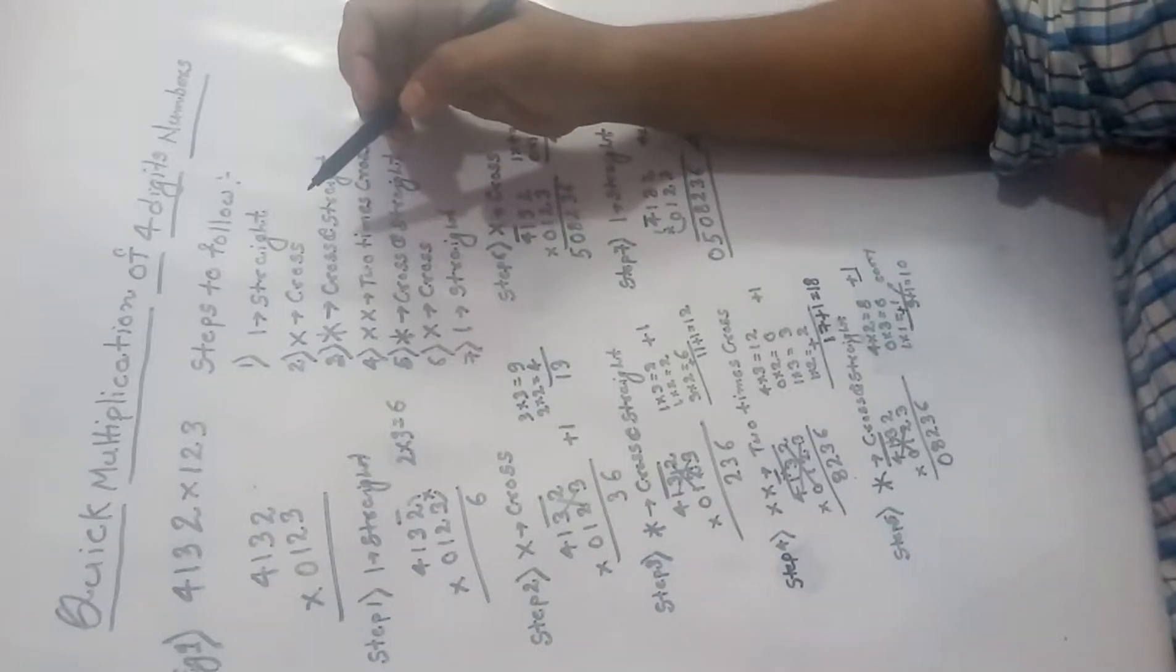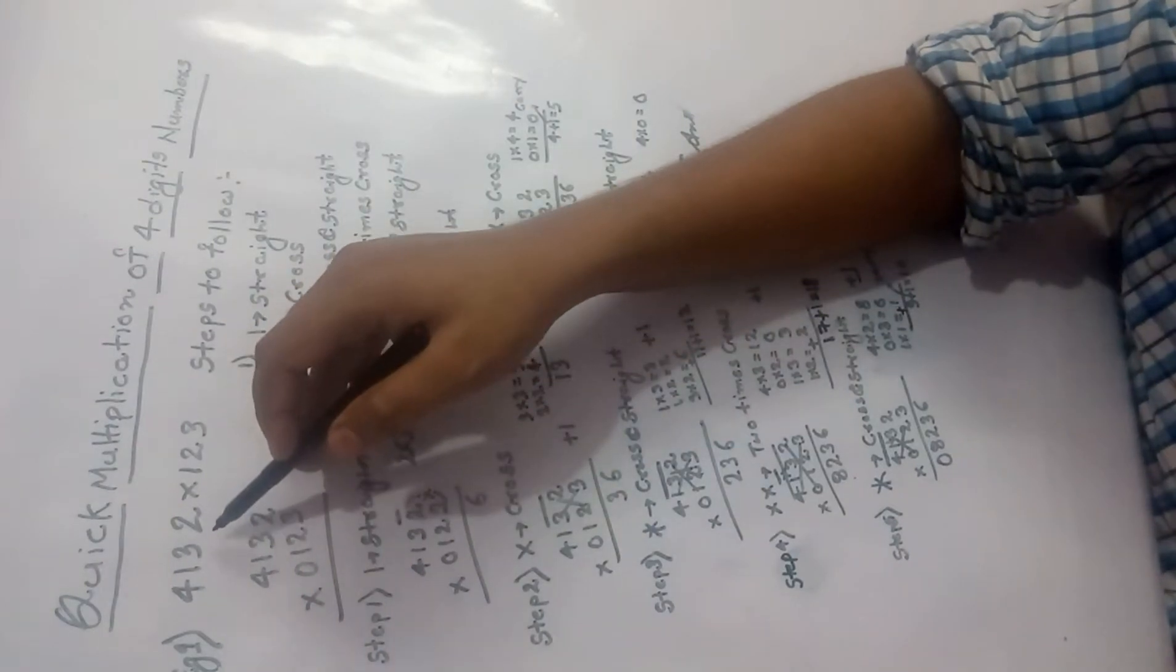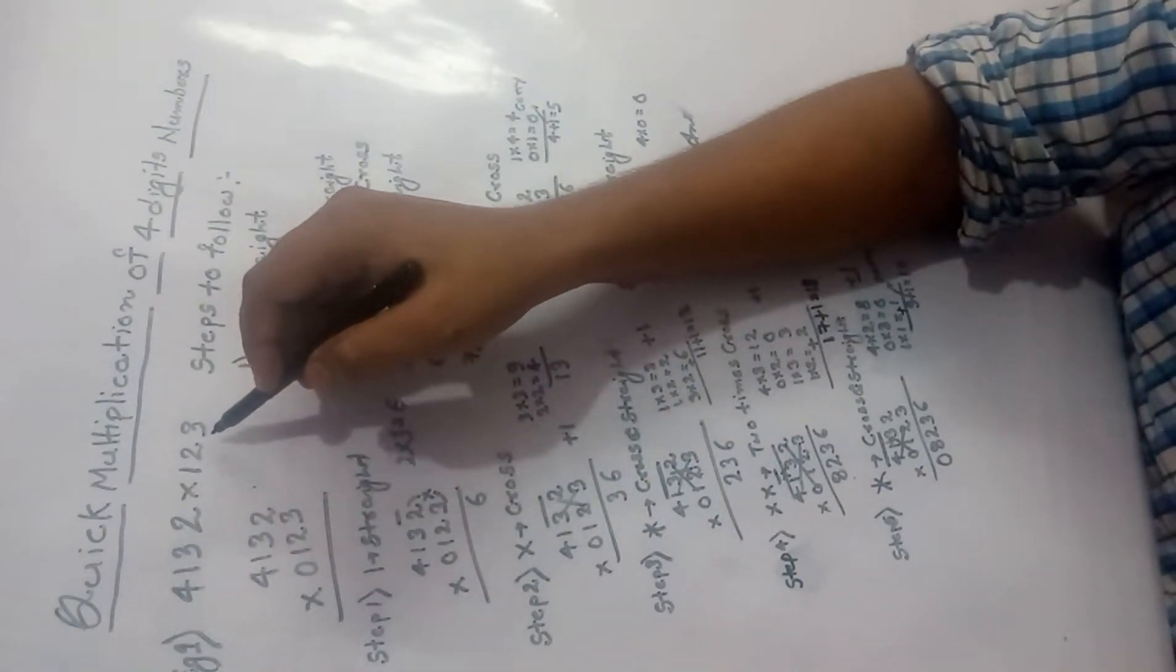Hello friends, today we are going to learn about quick multiplication of 4-digit numbers. Suppose we have a number like 4132 and that has to multiply with 123.